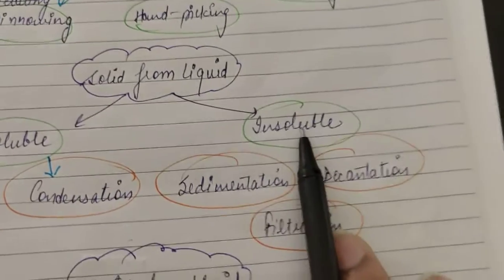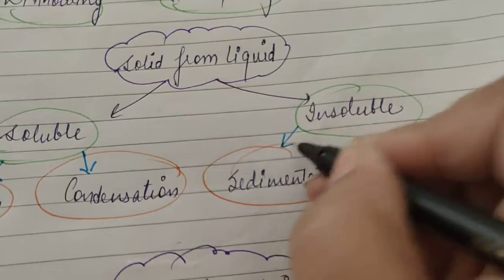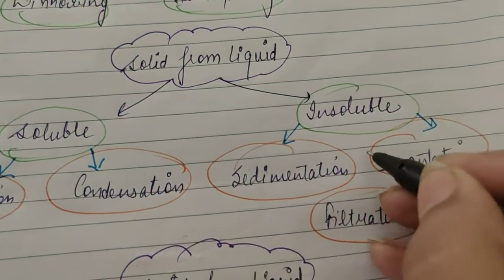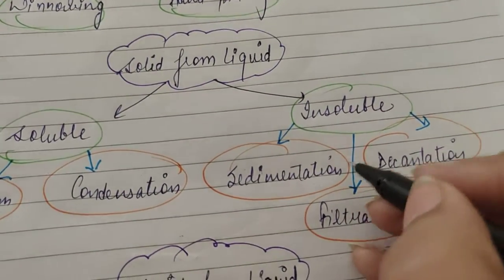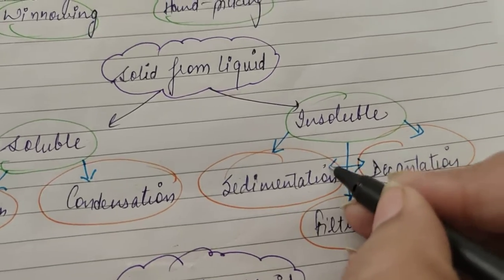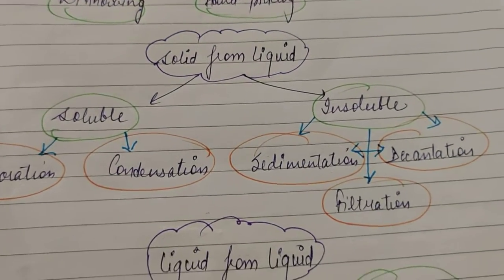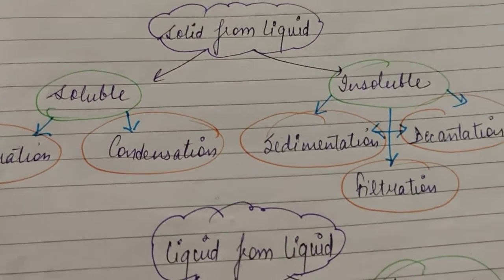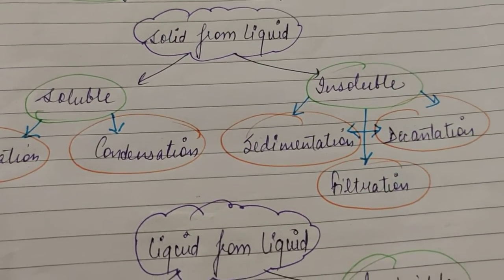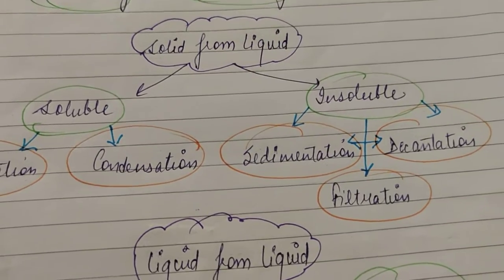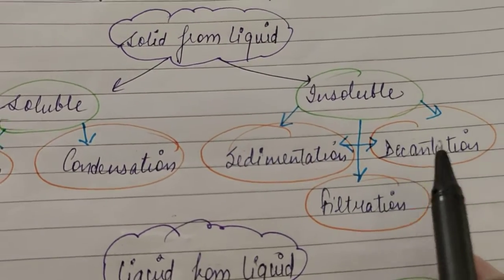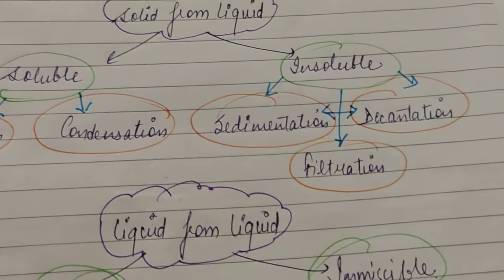Then if you have a solid which is insoluble, then for that we have three processes. These are basically two processes because sedimentation and decantation are interlinked. What is sedimentation? In sedimentation, the insoluble impurity is allowed to settle down. After some time when the impurities settle down, then the upper layer of the water is decanted, means poured into another container.